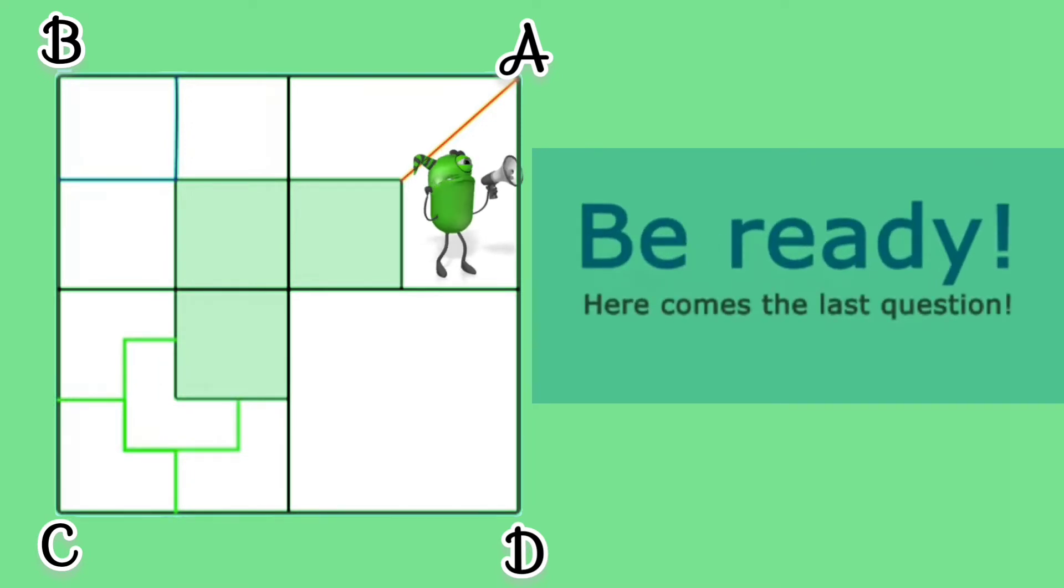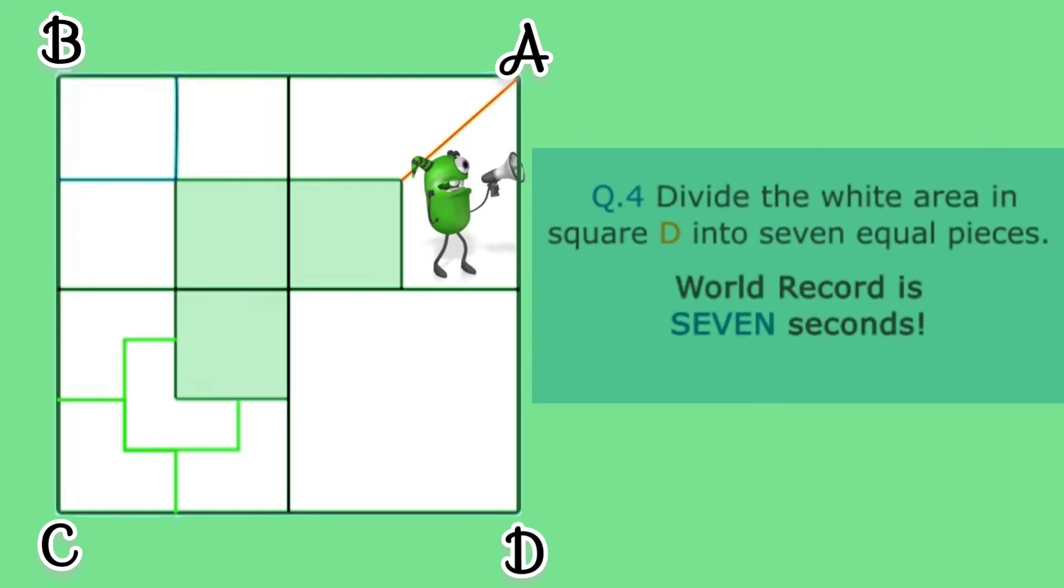Be ready, here comes the last question. Question number four: divide the white area in square D into seven equal pieces. World record is seven seconds.